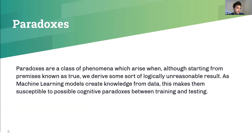To get started with the talk today, let's start by defining what paradoxes are. Paradoxes are a class of phenomena which arise when, although starting from premises not assumed to be true, we derive some form of a logically unreasonable result. As machine learning models create knowledge from data, this makes them susceptible to possible cognitive paradoxes between training and testing.